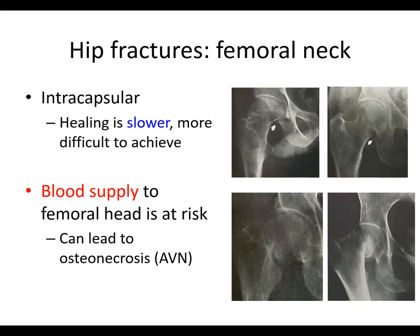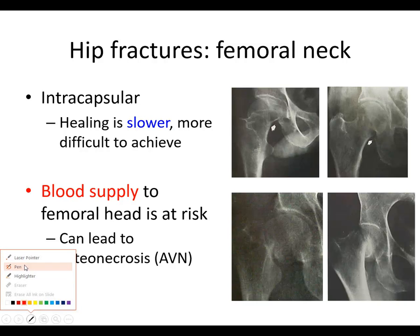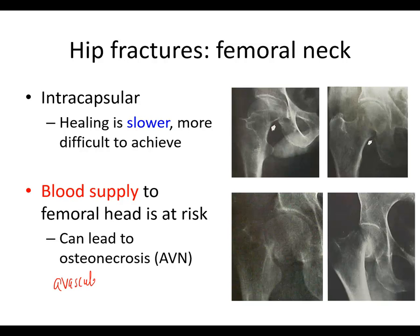A femoral neck fracture is an intracapsular fracture — it occurs inside the hip joint capsule, bathed in joint fluid. When you get a fracture, the joint fills up and distends with blood. Because it's bathed in joint fluid, healing is a little bit slower and more difficult to achieve. With femoral neck fractures you can disrupt the blood supply to the femoral head, which can lead to osteonecrosis or AVN — avascular necrosis — a very disabling condition. Osteonecrosis is the preferred term now, though some clinicians still use AVN.